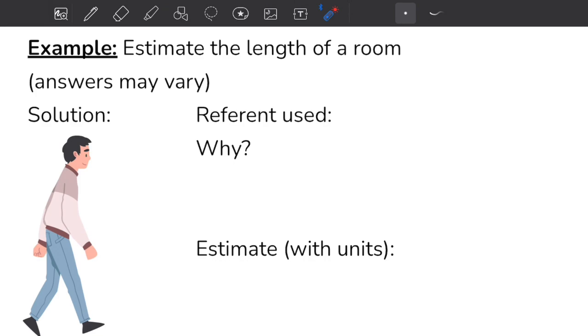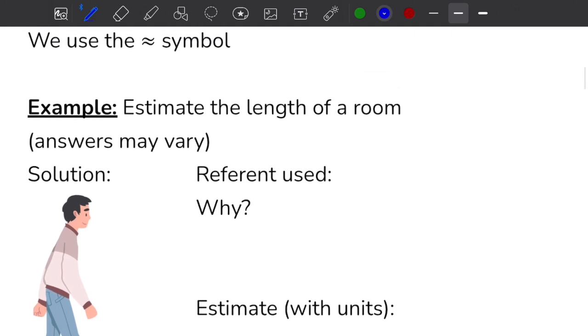In this example I'm going to estimate the length of the room that I am in, and I'm actually going to do this right now. I'm in a fairly small room, so keep in mind answers will vary because we're all in different rooms. What type of referent am I going to use? Because it's a room, I'm not going to use my thumb because that's not reasonable. I'm going to use a step.